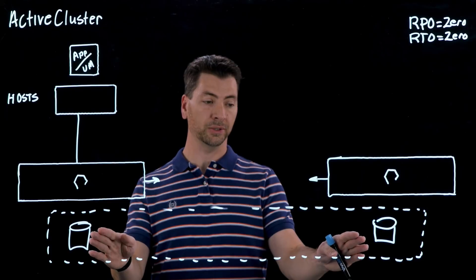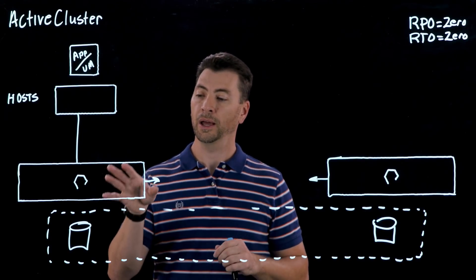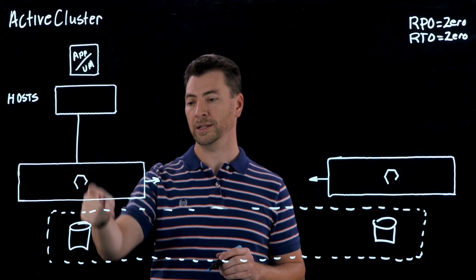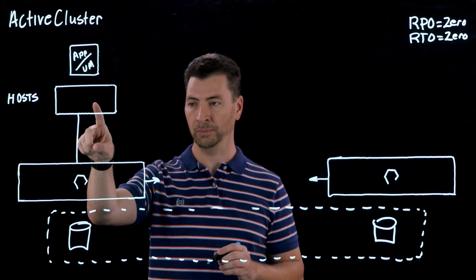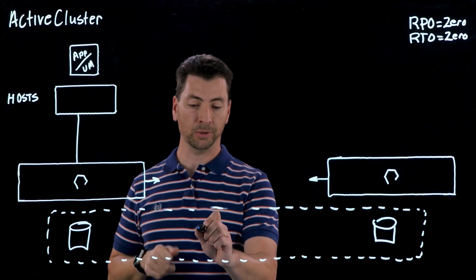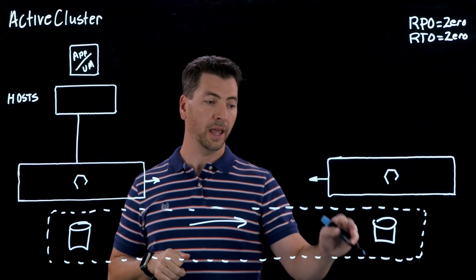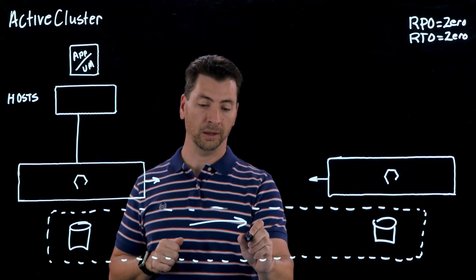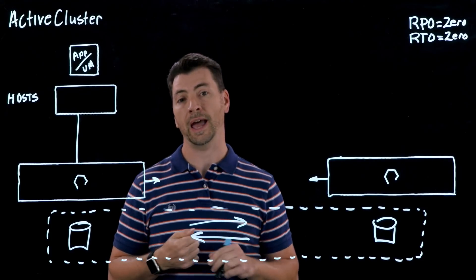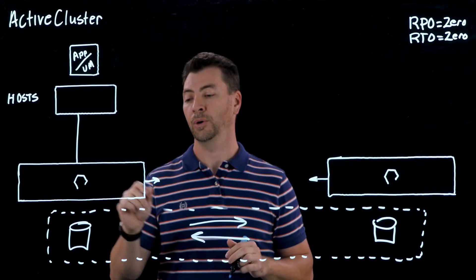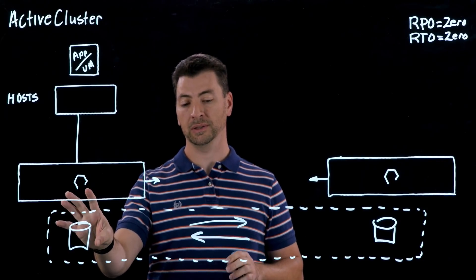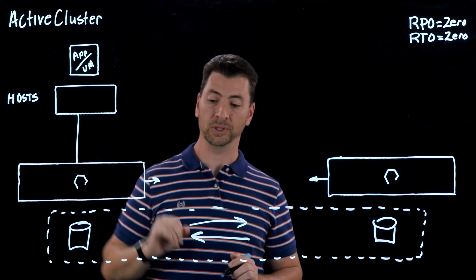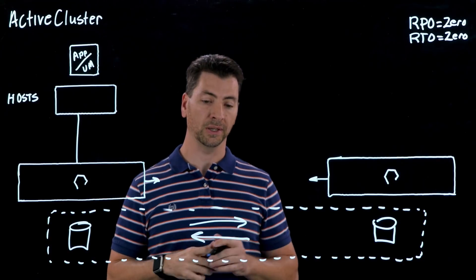Once we've completed the stretch and the asynchronous transfer is done, the arrays are going to transition into synchronous IO forwarding mode. Every write that comes into the system from the host is going to be synchronously forwarded to the array on the other side, and that array is going to protect that write in NVRAM and send the acknowledgement back to the first array. Only when this array has received the acknowledgement that the data is safely protected in NVRAM on both arrays will we acknowledge that write to the host — that's what effectively creates the synchronous replication.